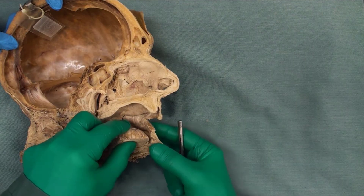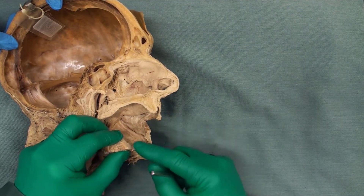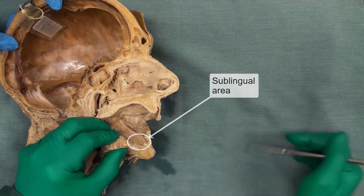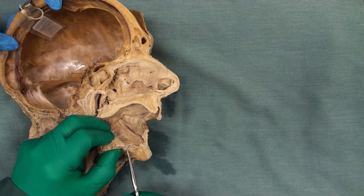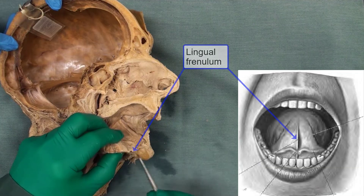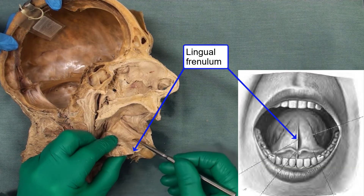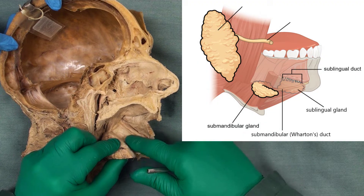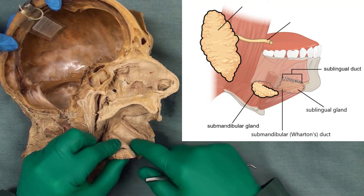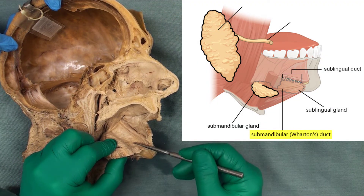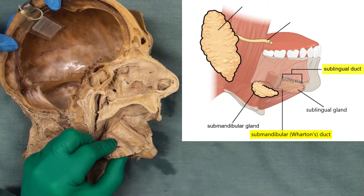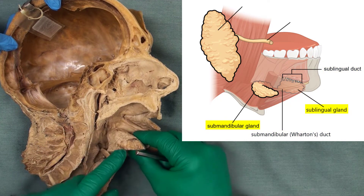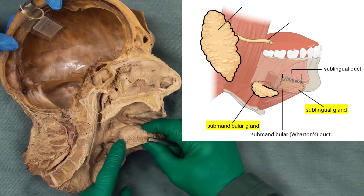Right under the tip of the tongue is the sublingual area. We have a mucosal fold in the midline called the frenulum, and on each side of the frenulum, in the rest of the floor of the oral cavity, we have the openings of the submandibular and sublingual ducts — two of the salivary glands.